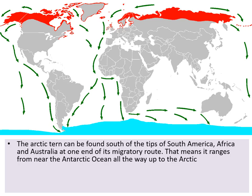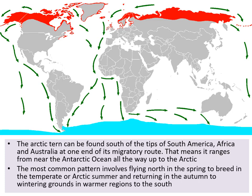This is the route shown by the Arctic Tern, which covers 11,000 miles from the North Pole to Antarctica. It is found south of the tip of South America, Africa, and Australia at one end of its migratory route — ranging from near the Antarctic Ocean all the way to the Arctic. The most common pattern involves flying north in spring to breed in the temperate or Arctic summer, then returning in autumn to warmer regions in the south.